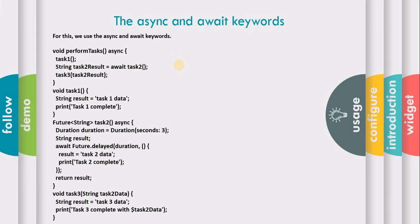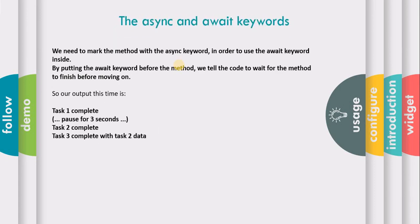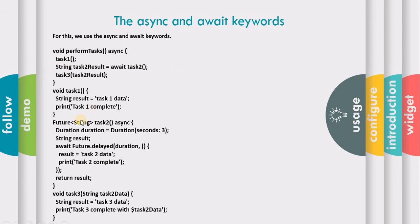For that we will use the async and await keywords. We mark the method with the async keyword in order to use the await keyword inside it. By putting the await keyword before the method, we tell the code to wait for the method to finish before moving on. This time the output is: task one complete, then a pause of three seconds, then task two complete, and then task three complete with task two data, because task two is an instance of Future<String> until completed, at which point it materializes into a string.